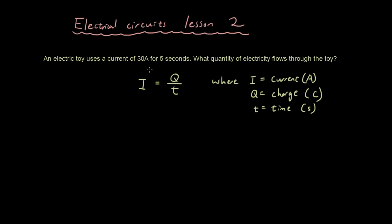So in this question, the current is 30 amps so I'm going to put 30 where I is, and the time is equal to 5 seconds so I'm going to put 5 where t is. And the quantity of electricity means the quantity of charge, how much charge flowed through the toy. So Q is the one we're looking for.